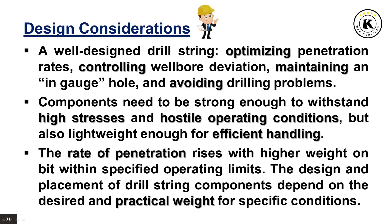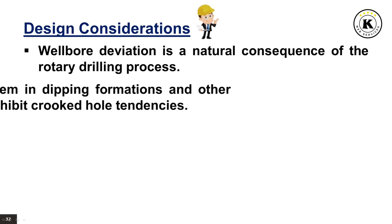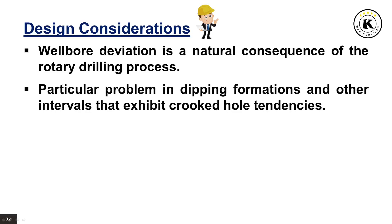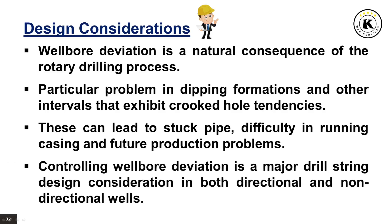Typically, the rate of penetration rises with higher weight on bit within specified operating limits. The design and placement of drill string components depend on the desired and practical weight for specific conditions. Wellbore deviation is a natural consequence of the rotary drilling process and can be a particular problem in dipping formations and intervals that exhibit crooked hole tendencies, leading to stuck pipe, difficulty in running casing, and future production problems. Controlling wellbore deviation is a major drill string design consideration in both directional and non-directional wells.